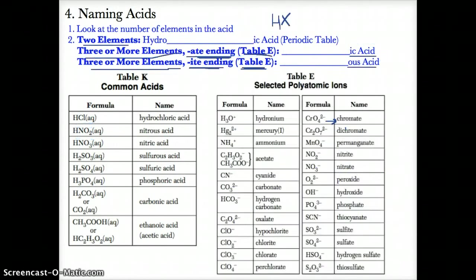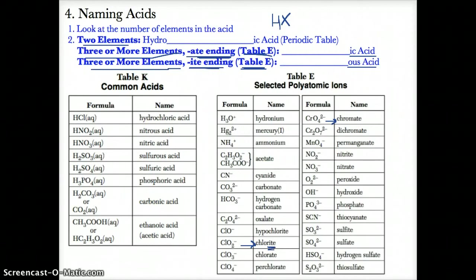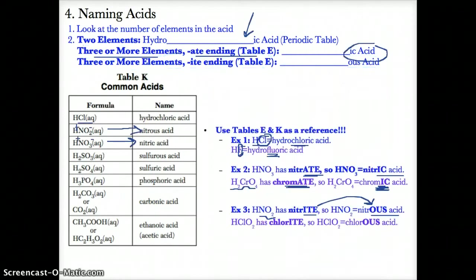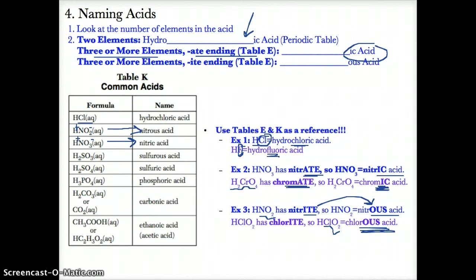Similarly, HClO2 contains the negative ion ClO2-. Since ClO2- is chlorite on table E, with an -ITE ending, rename it not chlorite but rather chlorous acid, because any polyatomic ion with an -ITE ending is named with -OUS acid at the end.